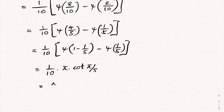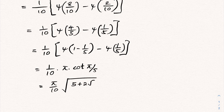This equals (pi/10) times cotangent(pi/5), which equals (pi/2) times cotangent(pi/5), knowing that cotangent(pi/5) = sqrt(5 + 2*sqrt(5)) / sqrt(5). This is the final answer for this integral. If you like this type of video, please subscribe to the channel. Thank you for watching.